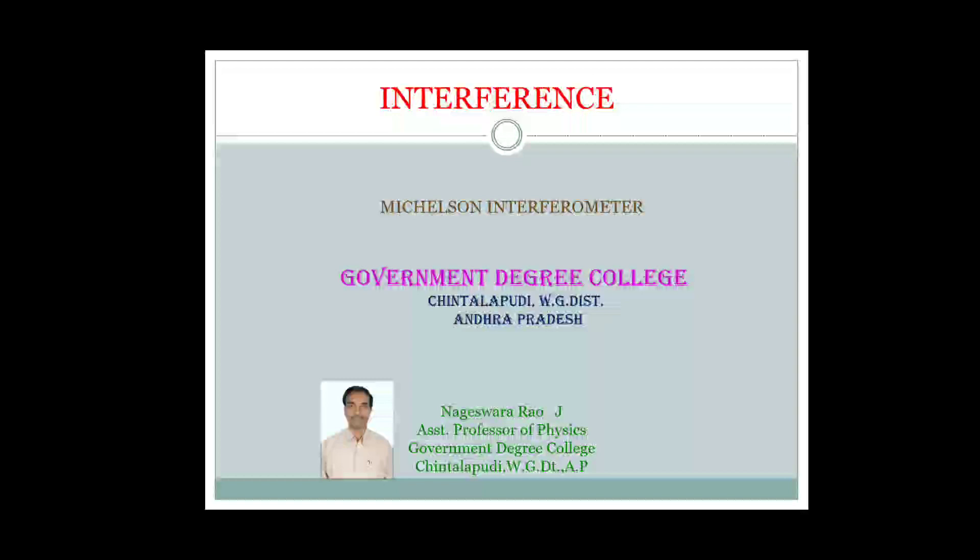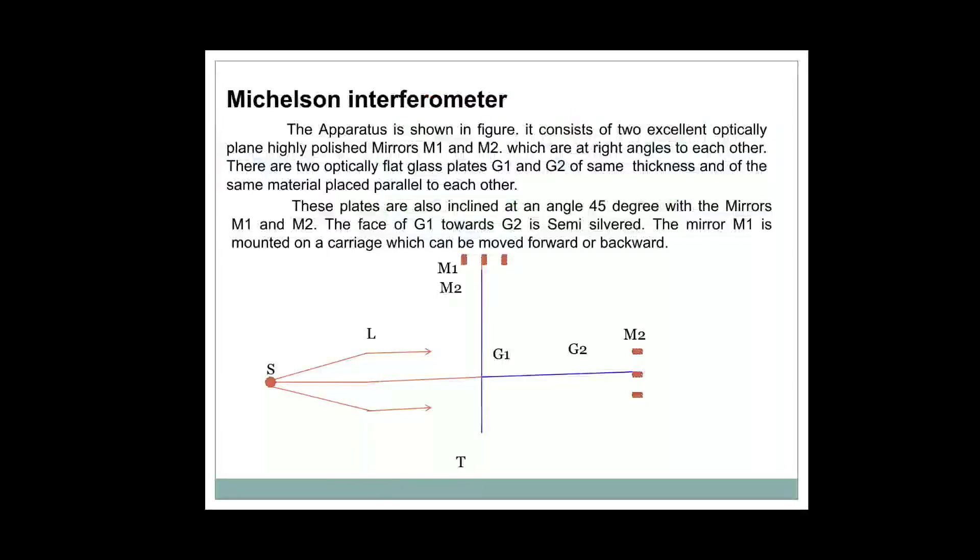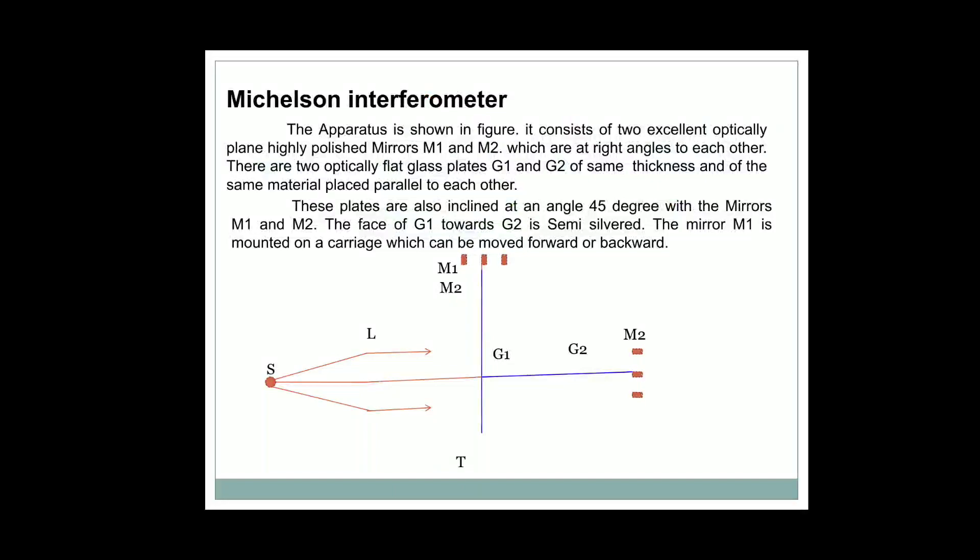We will discuss how we can determine the wavelength of light and also the applications of the Michelson interferometer. It consists of two excellent optically plain mirrors M1 and M2, placed perpendicular to each other. There are two glass plates G1 and G2, in which G1 is semi-silverized towards the glass plate G2. S is a source of light, which may be monochromatic light, and L is a convex lens.